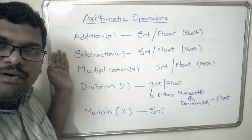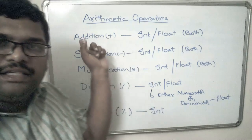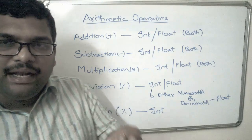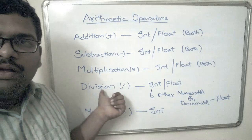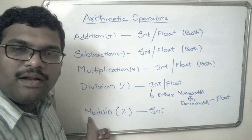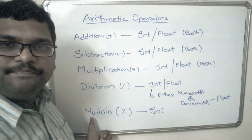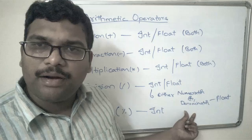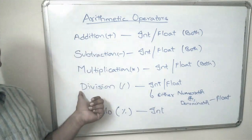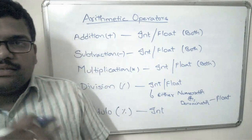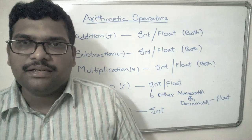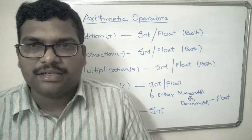All five operators — addition, subtraction, multiplication, division, and modulo — are arithmetic operators. The key difference: division gives the quotient as the result, while modulo gives the remainder. The constraint for division is that either numerator or denominator must be float to get an accurate result. Hope you understood these arithmetic operators. In the next session we will discuss another type of operators. Thank you.